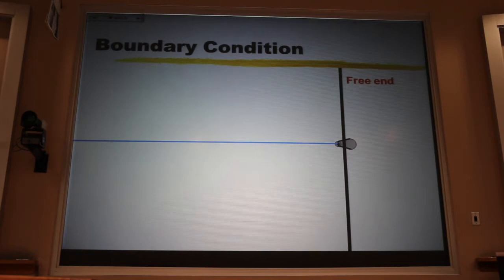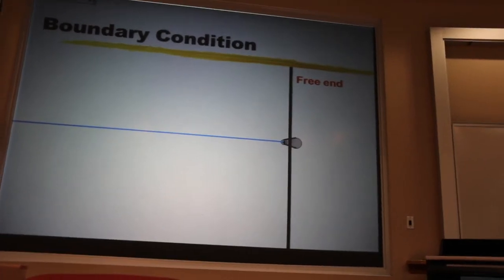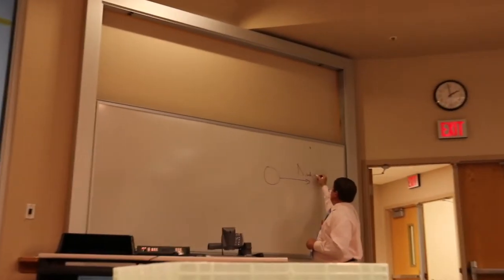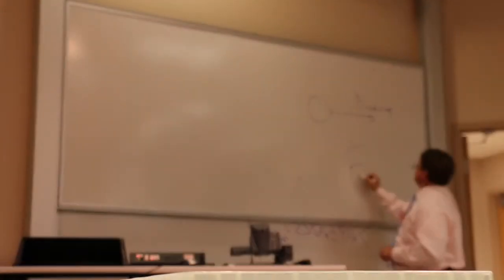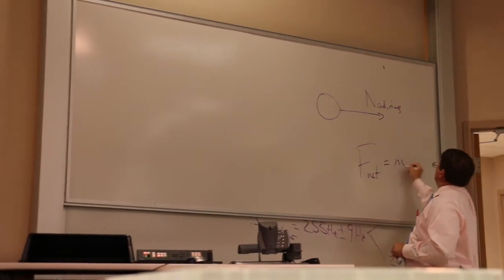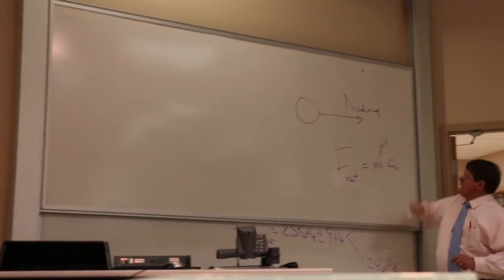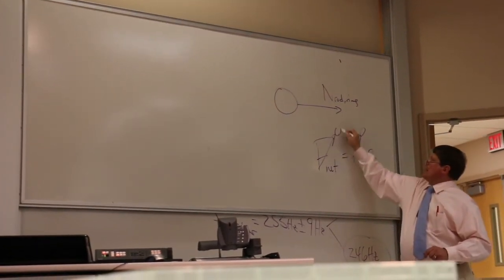Now, if I look at that ring, if it's frictionless, the only force that the rod can put on it is a normal force. If I look at Newton's second law, if the mass of the ring is zero, that means the net force on the ring has to be zero.